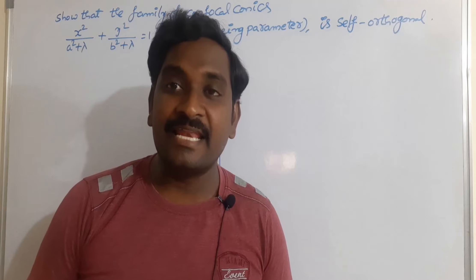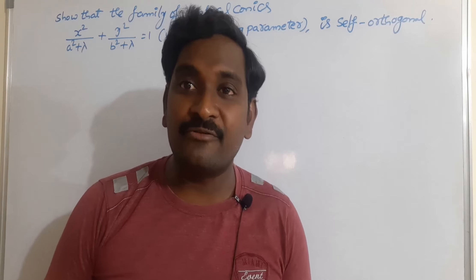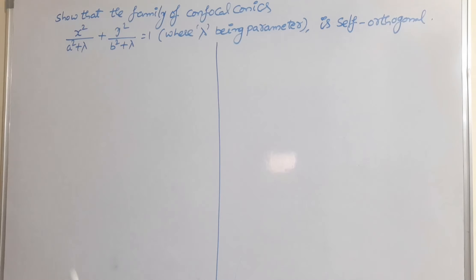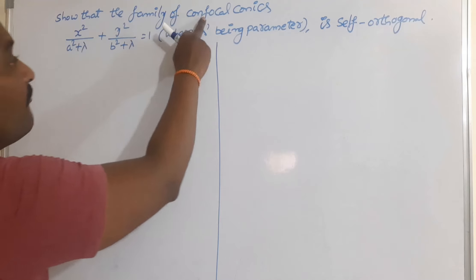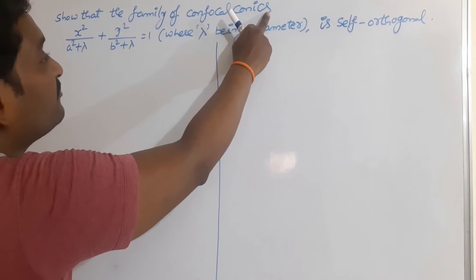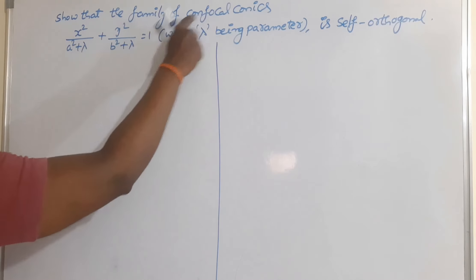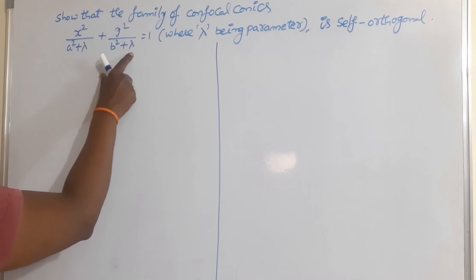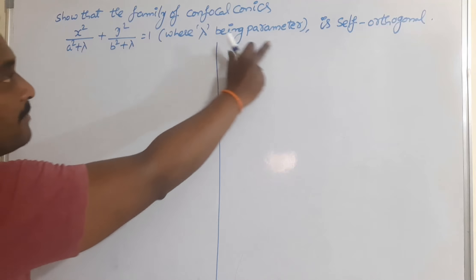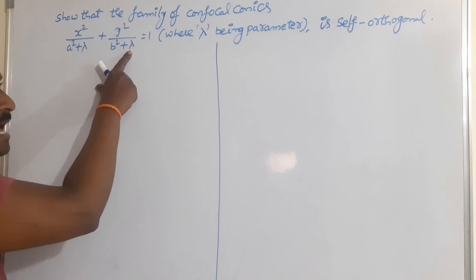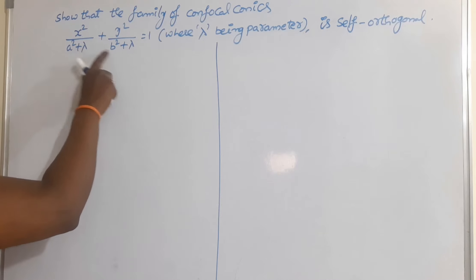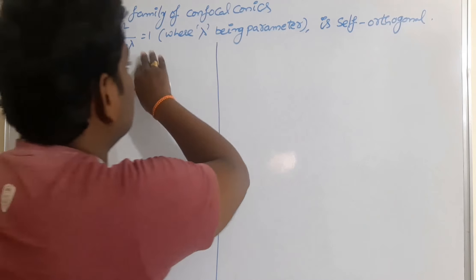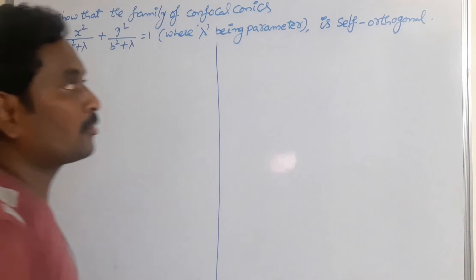Hi everyone, welcome back to our channel. In this video I would like to give an example on self-orthogonal systems. The statement of the given problem: show that the family of confocal conics whose equation is x²/(a²+λ) + y²/(b²+λ) = 1, where λ is the parameter and a, b are constants, is self-orthogonal.